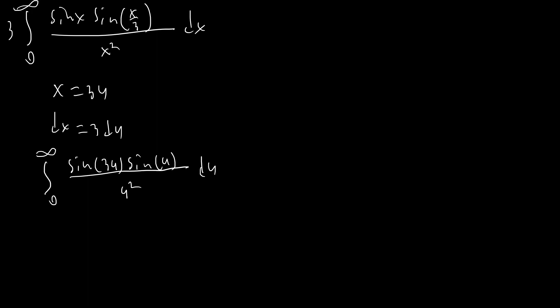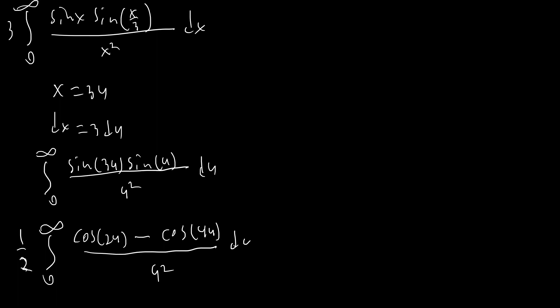Next we apply the sine product identity: one half times the integral from zero to infinity of cosine(2u) minus cosine(4u), all over u². Then we take the Laplace transform of cosine(2u) minus cosine(4u), which gives u/(u²+4) minus u/(u²+16).